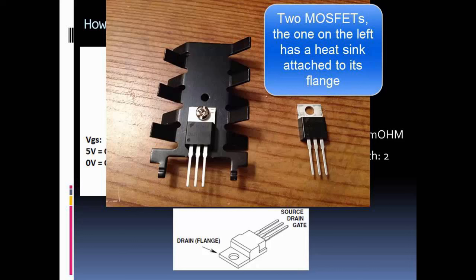In linear voltage regulators, a MOSFET is used as a variable resistor to control the output voltage, adjusting its resistance to regulate the voltage across the load. The MOSFET is typically used as a series pass element, connected in series with the load, and its gate voltage is adjusted to maintain a constant output voltage.